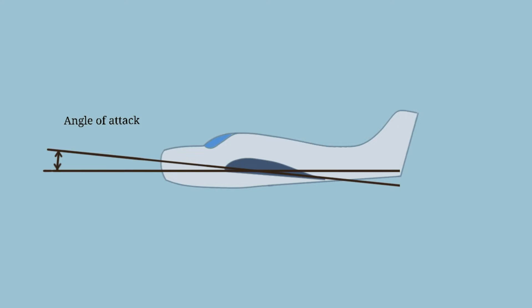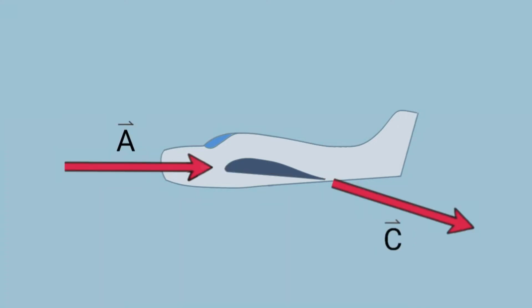To see how this generates lift, let's look at the vectors. Here, vector A is the initial velocity of the airflow as it approaches the wing. Vector C is the final velocity after the wing has deflected the airflow downwards. This isn't exactly accurate. There's some turbulence and vortex shedding, but this is the overall net effect. So vector A plus a deflection in the airflow, vector B, equals vector C.